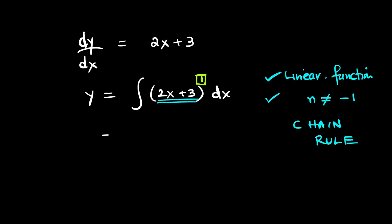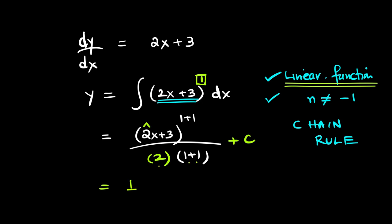So, let's start with the chain rule. The bracket remains as it is. Power increases by 1. Divide by the new power. Don't forget to divide by coefficient of x or derivative of bracket. That is the same thing when we are dealing with a linear expression plus a constant of integration c. 1 plus 1 is 2. 2 into 2 is 4. So, this is 1/4(2x plus 3) whole square plus c.